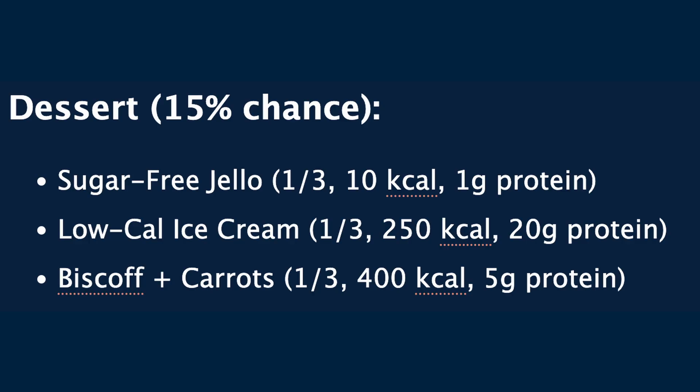Sometimes I get the late-night munchies and feel the need for something sweet — true story. About 15% of the time I get a sweet tooth at night and choose between three options: sugar-free jello, low-calorie ice cream, or Biscoff and carrots. The Biscoff butter with carrots makes you feel healthy when it's not. My goal is to stay between 2,000 and 2,200 calories and have over 130 grams of protein. So what's the probability I'd be under my calorie limit, hit my protein goals, and do both?